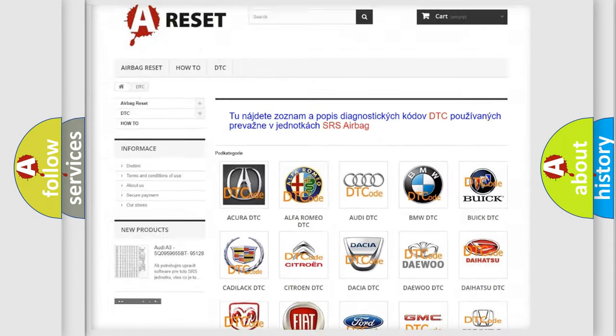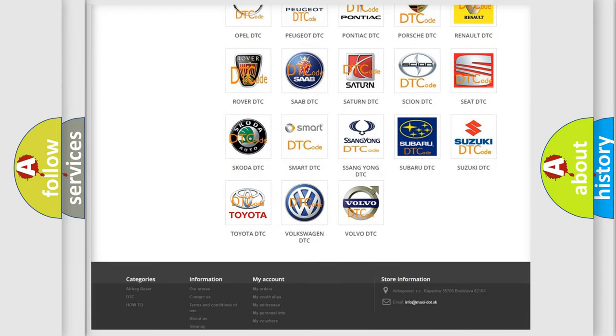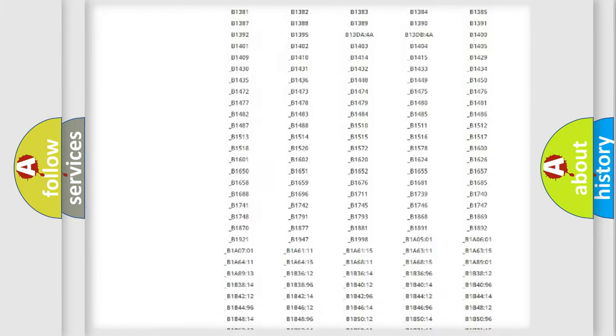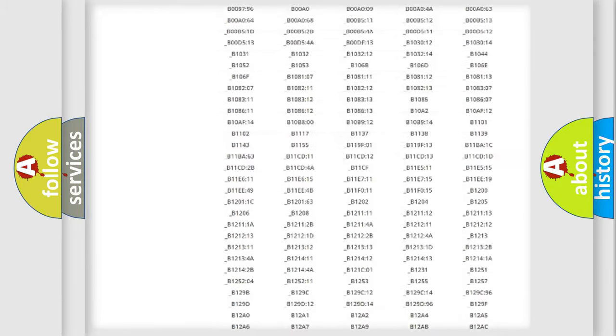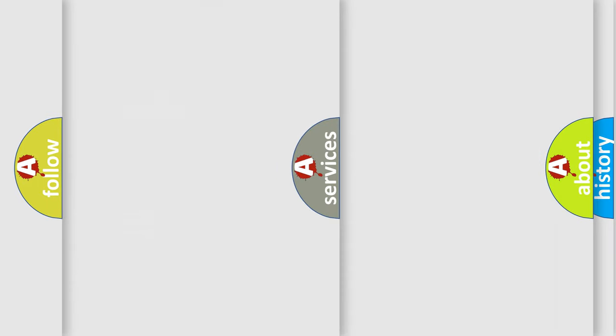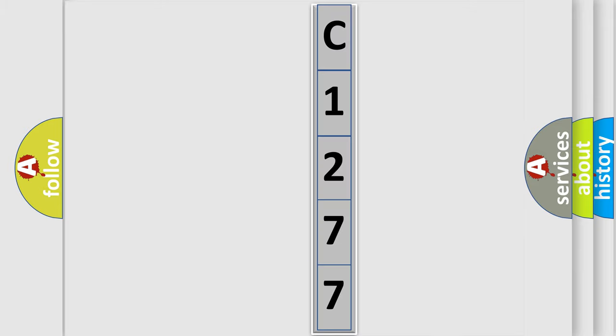Our website airbagreset.sk produces useful videos for you. You do not have to go through the OBD2 protocol anymore to know how to troubleshoot any car breakdown. You will find all the diagnostic codes that can be diagnosed in Toyota vehicles, and many other useful things. The following demonstration will help you look into the world of software for car control units.